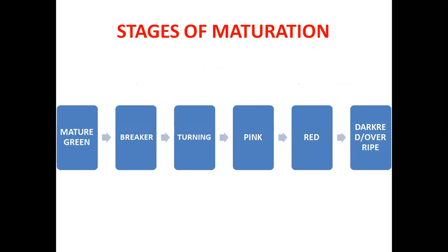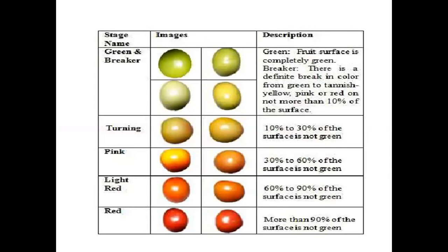Green stage: fruit surface is completely green. Breaker stage: not more than 10 percent color development. Turning: 10 to 30 percent color change. Pink: 30 to 60 percent. Light red: 60 to 90 percent. Red: 90 percent of fruit is ripe. Over-ripe: complete over-ripening with softening — up to red the fruit is firm, after that it becomes soft. For processing, red to over-ripe fruits are used. For long-distance marketing, turning to pink stage fruits are used. In pink stage, the highest vitamin C content is observed.